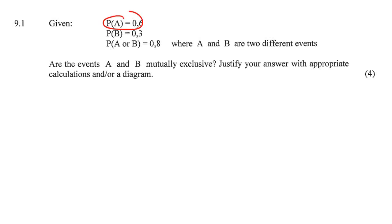So we are given the probability of A, probability of B, and we're also given probability of A or B. Are the events A and B mutually exclusive? Justify your answer with calculations.